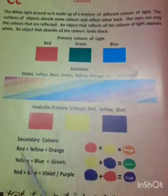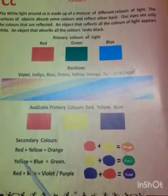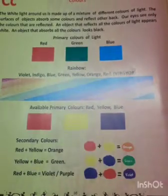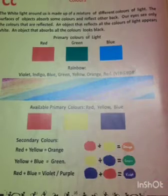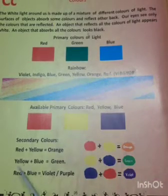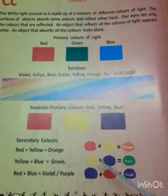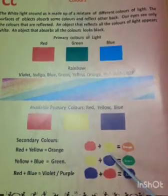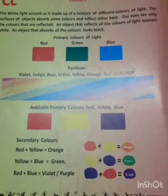The secondary colors are the mixture of two primary colors — they will make some other colors. Red plus yellow is equal to orange. If you add the red and yellow color, you will get orange color. Shall we try, children?